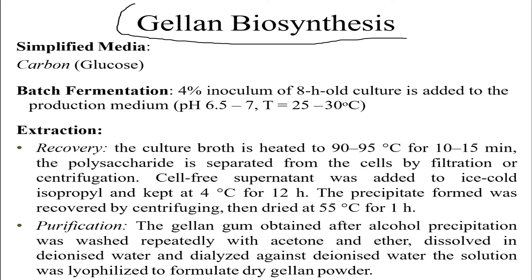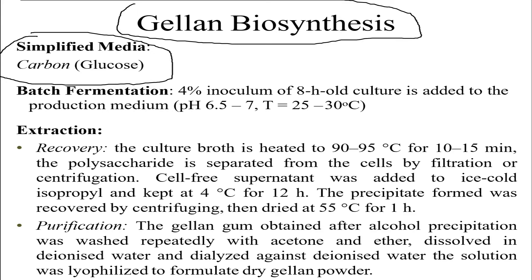Now let's talk about the biosynthesis of gellan. It requires a carbon source, mainly glucose, as with almost every exopolysaccharide. It is fermented in batch fermentation requiring four percent inoculum of an eight-hour-old culture added to the production media, maintained at pH 6.5 to 7 and a temperature of 25 to 30 degrees Celsius. Extraction methods differ for each exopolysaccharide.